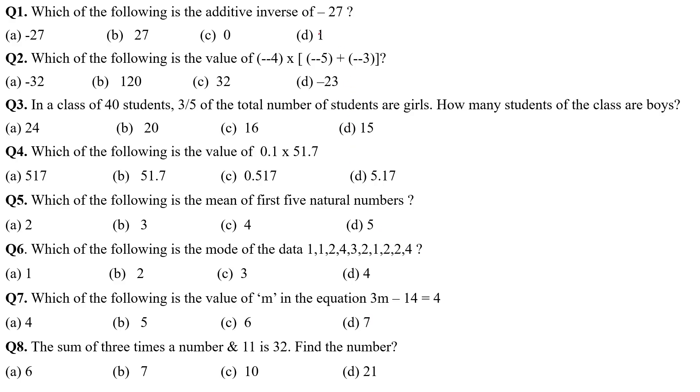First question is, which of the following is additive inverse of minus 27? Very nice, it is plus 27. Which of the following is the value of minus 4 into minus 4 plus minus 3? So, this is minus 8 and into minus 4 that will be plus 32. C is the option correct.